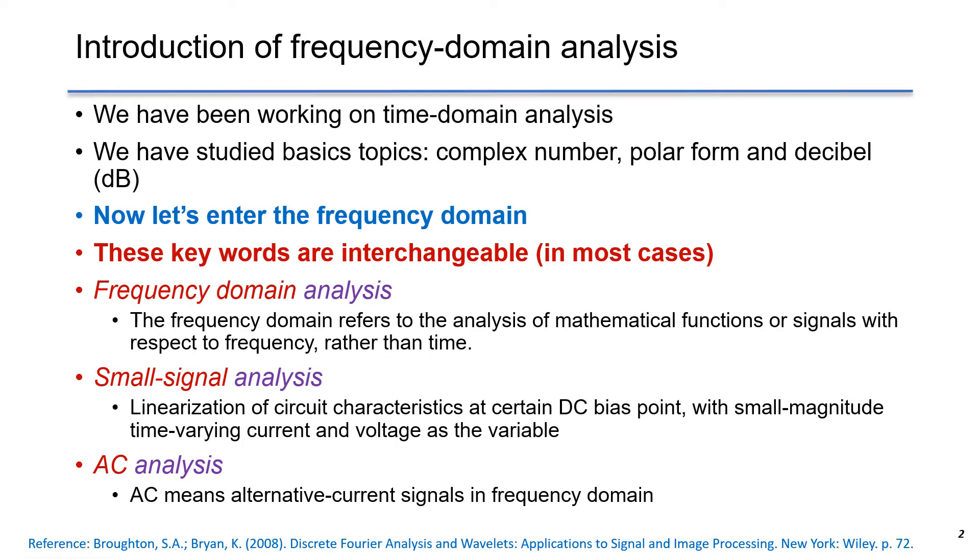So far, we have been working on time domain analysis. Now we will enter the AC analysis in frequency domain. AC means alternative current signals such as sine or cosine at certain frequency and magnitude. When we talk about frequency domain in circuit analysis, some keywords are actually interchangeable in most cases, such as frequency domain analysis, small signal analysis, and AC analysis. Essentially, they are talking about the same thing.